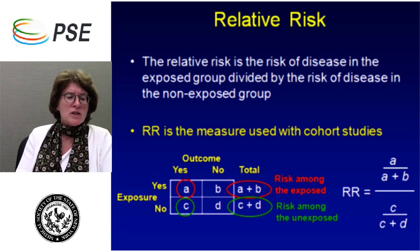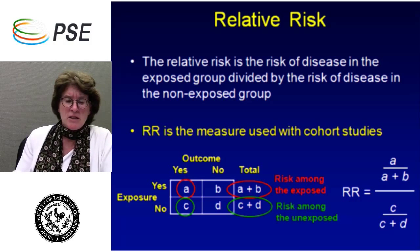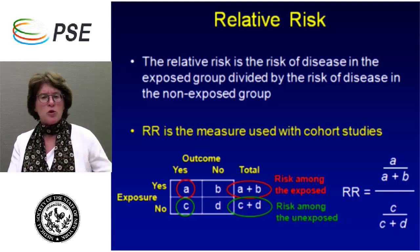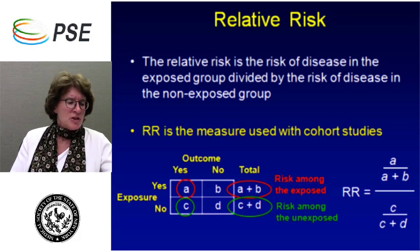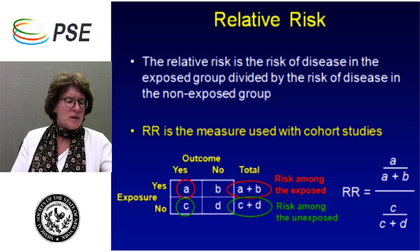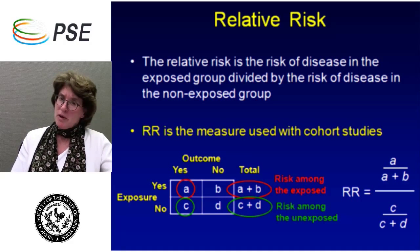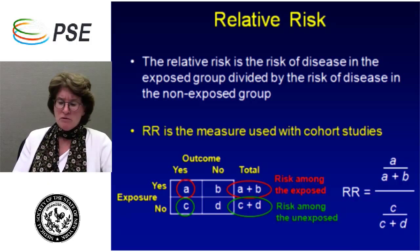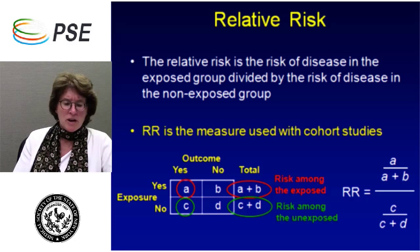The relative risk is the risk of disease in the exposed divided by the risk of disease in the non-exposed. Here's the formula — you have a typical 2x2 table with cells A, B, C, and D. Cell A is yes exposure, yes outcome; B is yes exposure, no outcome; C is no exposure, but disease; and D is no exposure, no disease. The formula is shown on the right of the screen. The relative risk will give you a number greater than one, less than one, or around one.